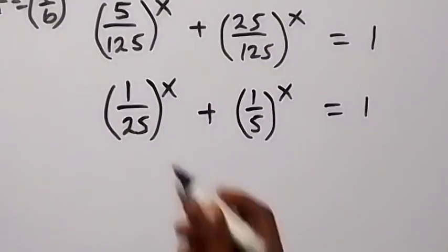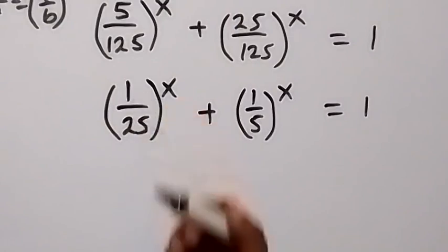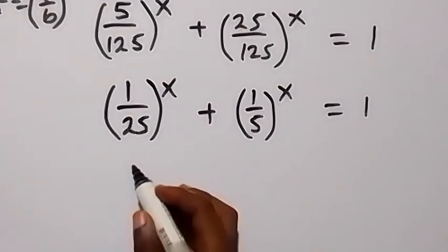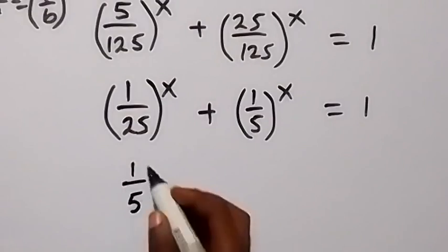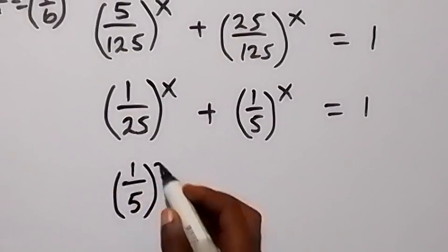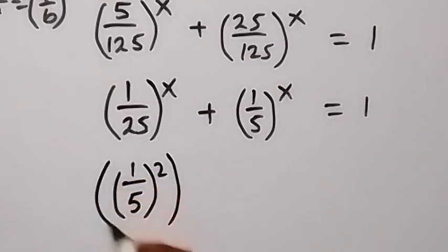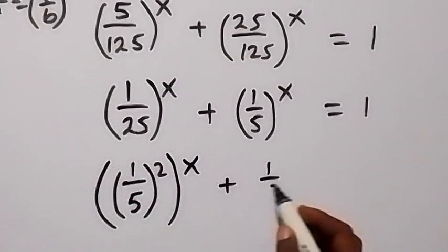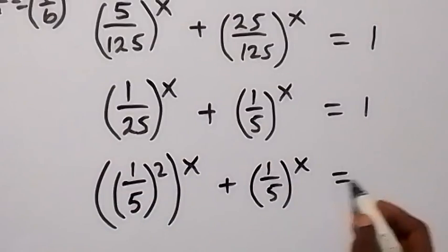We can also express 25 as 5 squared, so 1 over 25 can be written as (1 over 5) all squared, raised to the power x. Then plus 1 over 5 raised to the power x equals 1.